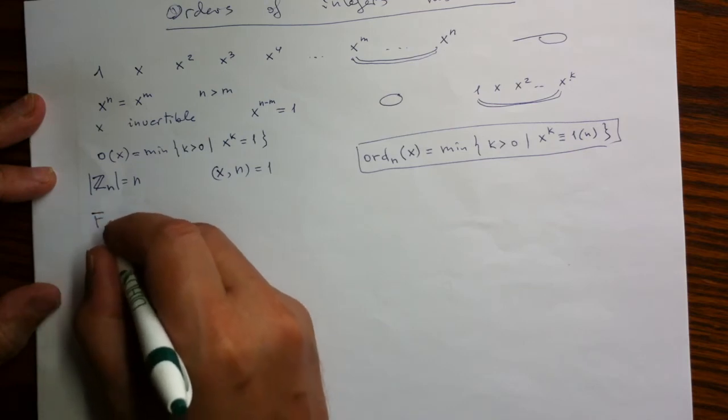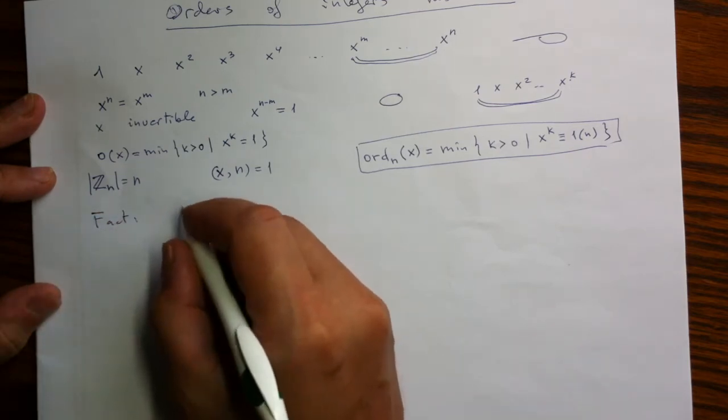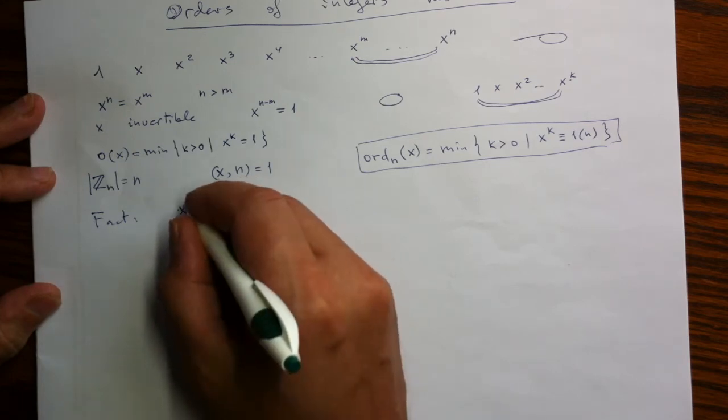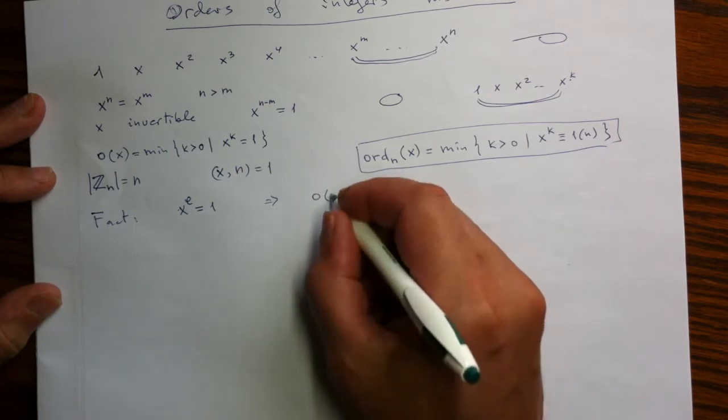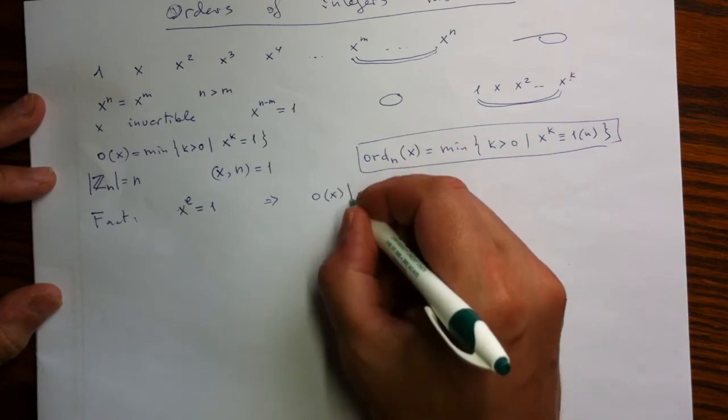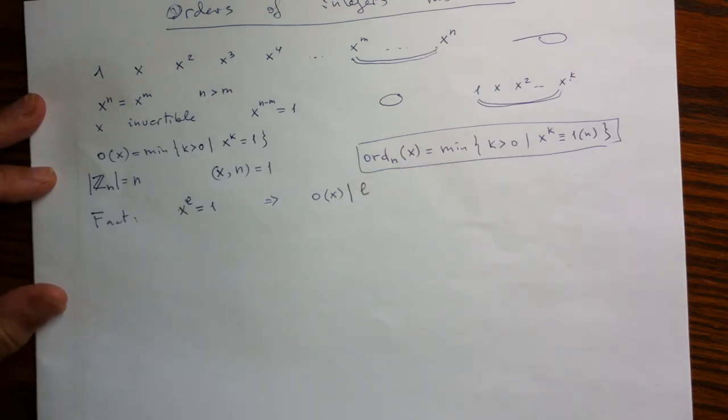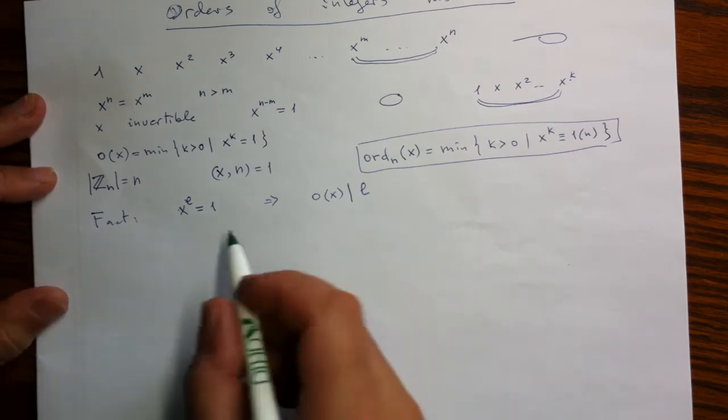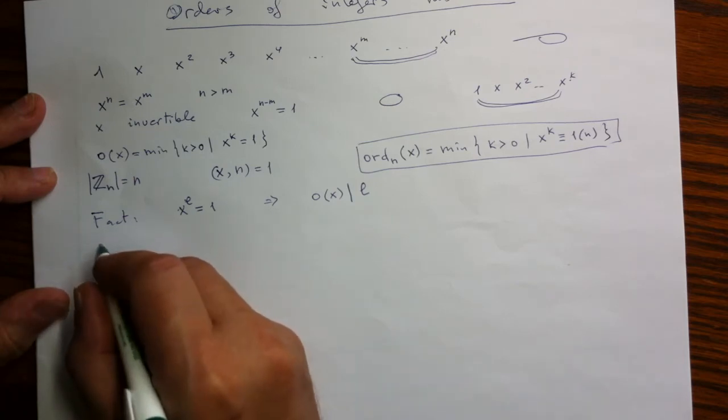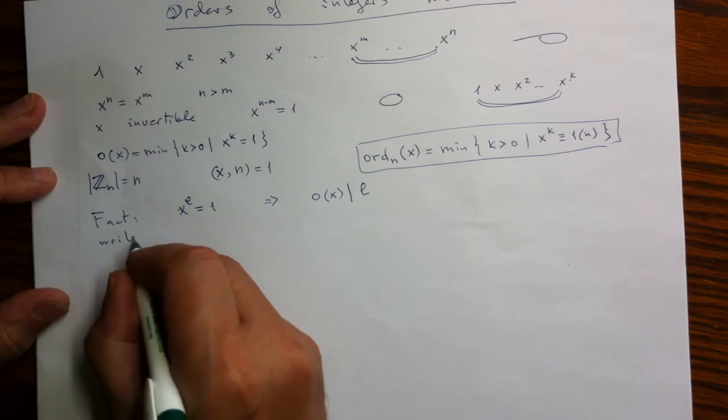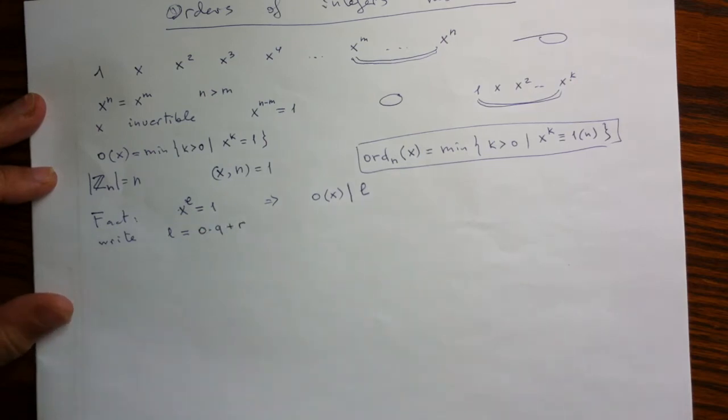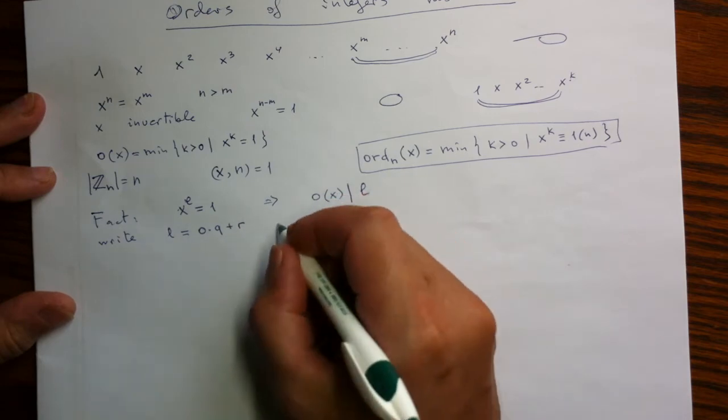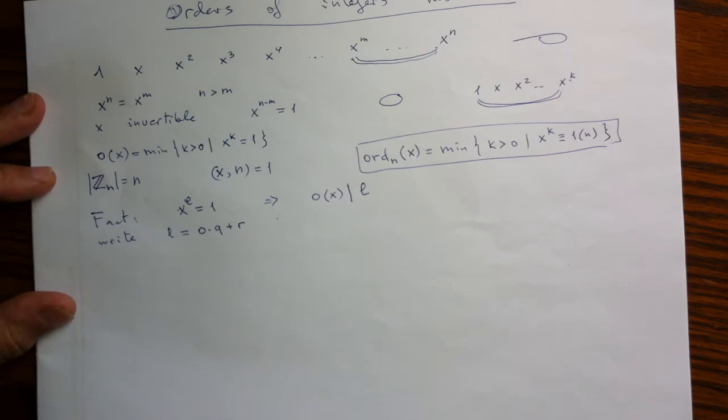And so the first basic fact about it is assume that we have an equation x to some power l is equal to 1. Then the order of that x, the smallest power, has to divide this l. It is easy to convince yourself in this fact. I will just give a very short number theoretic argument. So just to write l as a multiple of this order, I will call it O. So some multiple plus a remainder. We always can do it. It is always possible for integers. We can treat them as natural numbers even. And then we can be sure that the remainder will be less than the divisor, than this order O.